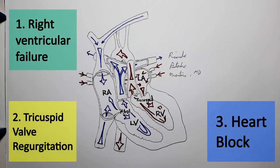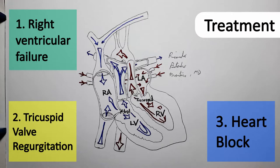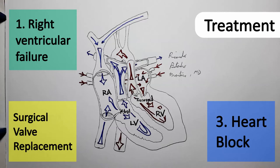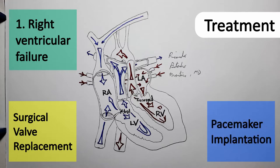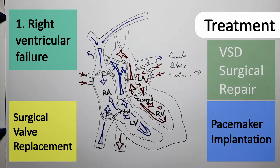Since we already know the complications, we can deduce the treatment. Severe tricuspid valve regurgitation is going to be treated surgically with tricuspid valve replacement. Complete heart blocks will be treated through pacemaker installation. Associated defects such as a ventricular septal defect may also be closed surgically early on. Unfortunately, standard therapy for heart failure — including diuretics, digitalis, and beta blockers — has shown very little effect on reducing mortality in cases of systemic right ventricular failure.